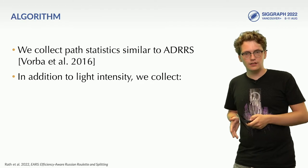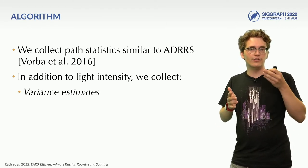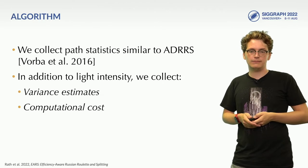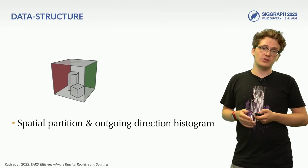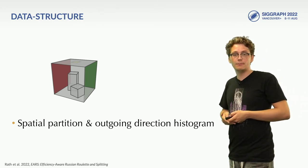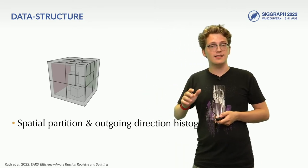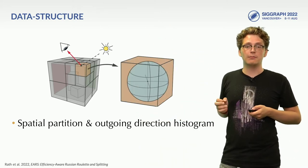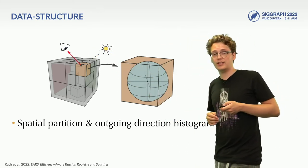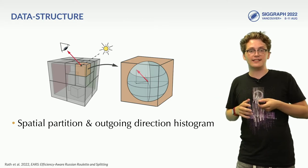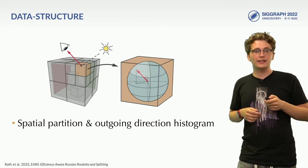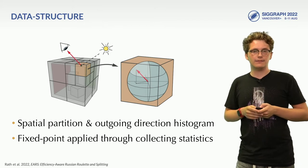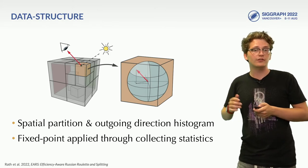While the theory of our paper might be somewhat involved, the resulting algorithm is actually surprisingly simple to implement. At its core, all we do is collect path statistics, just like joint-driven Russian Roulette and splitting does. But in addition to light intensity, we are also building estimates of the variance of paths — how noisy the remainder of the path tends to be — as well as the cost, so how many bounces tend to be needed to reach a light source. We use the same data structure as joint-driven Russian Roulette and splitting: we partition the scene spatially, and when we need statistics to compute a splitting factor, we look up the current intersection point. The corresponding region contains a histogram over outgoing directions, where we look up the last ray's direction and get the histogram cell containing all necessary statistics like light intensity, noise, and cost. The fixed-point scheme is solved implicitly just by collecting these statistics, meaning there is next to no additional cost over joint-driven Russian Roulette and splitting.